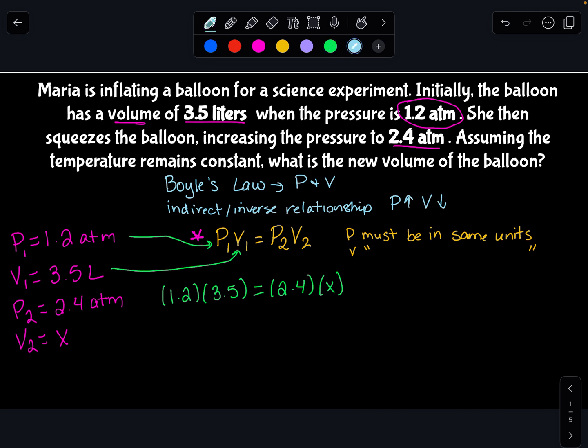Now you're just going to combine your values on either side. So 1.2 times 3.5 is going to equal, get my calculator out here, times 3.5 equals 4.2. And that 4.2 is going to equal 2.4 times x.